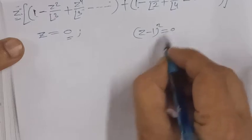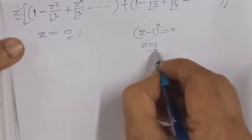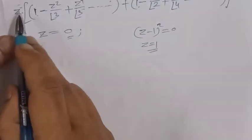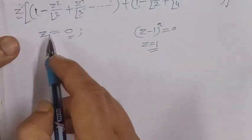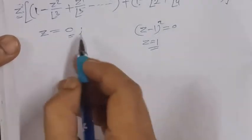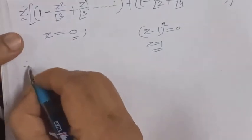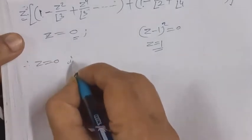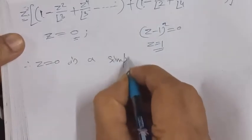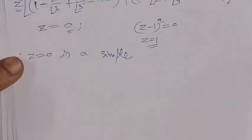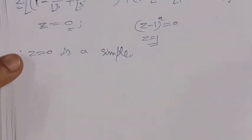After factoring out z² from the denominator and simplifying, we find that z = 0 is a pole of order 2.